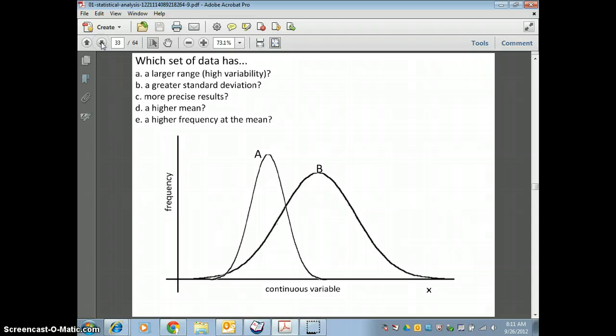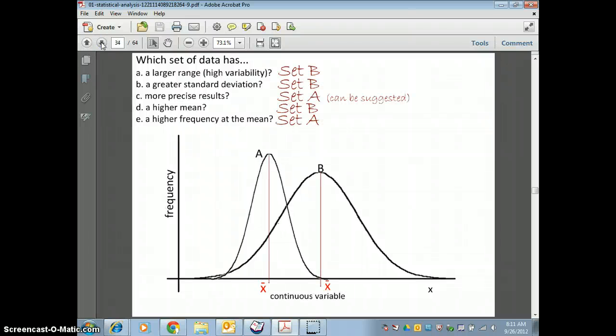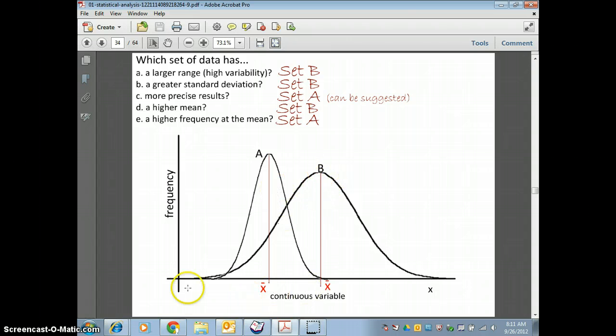Which data set has a higher range? Let's see, B, higher range, greater standard deviation, set B. More precise results, probably set A because it has a smaller standard deviation. Higher mean, well, if we were looking at the numbers at the bottom, there would be numbers down here. This would have a higher mean, and higher frequency at the mean, meaning more data sets at its mean, would be A.